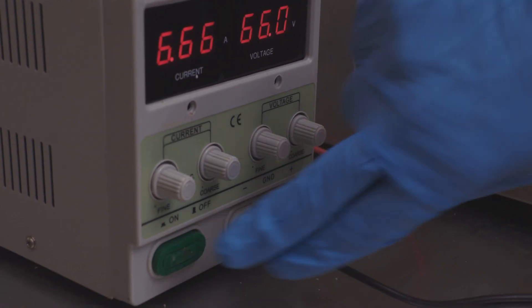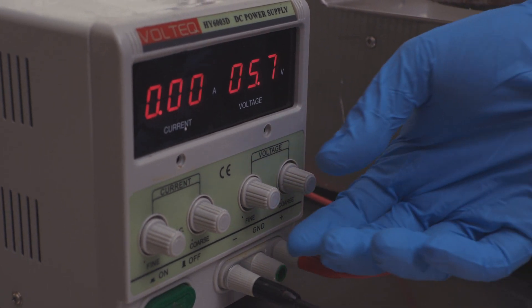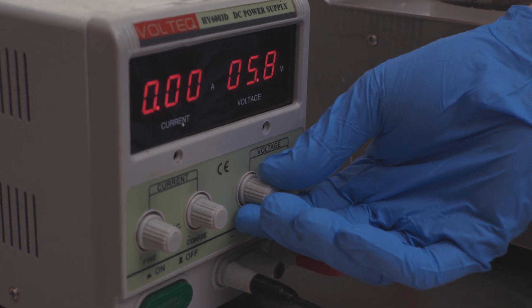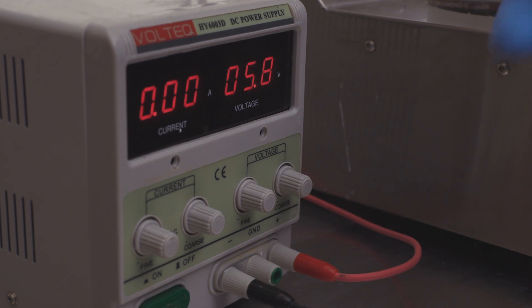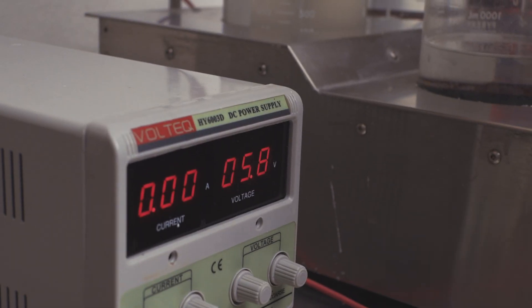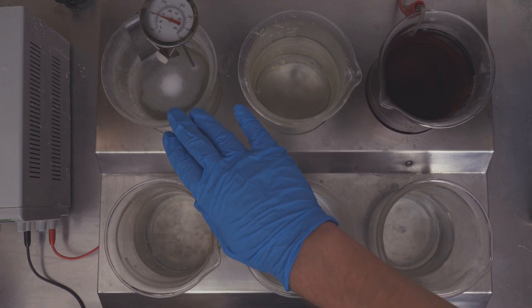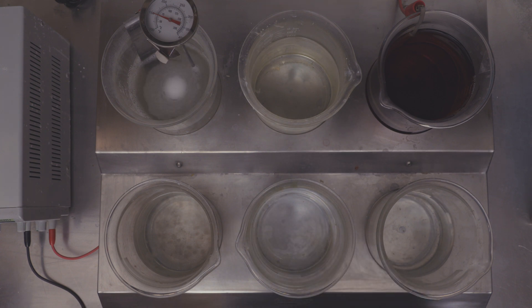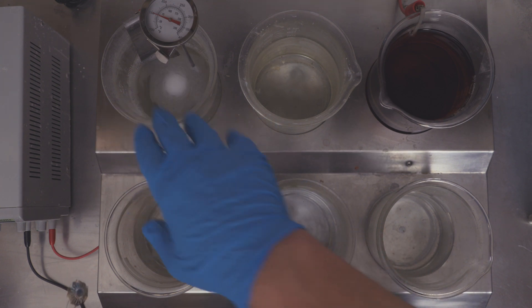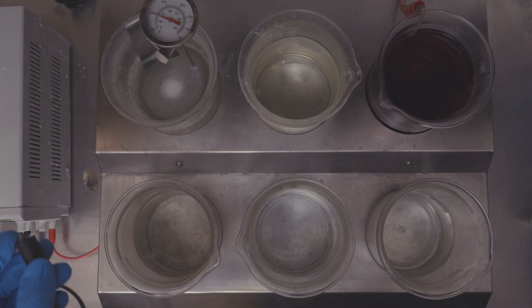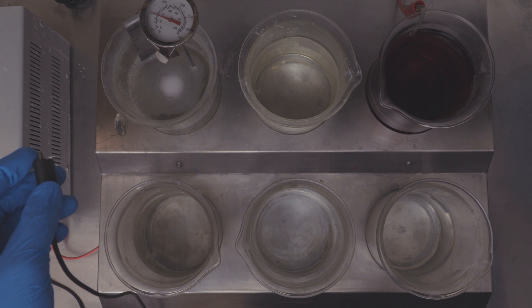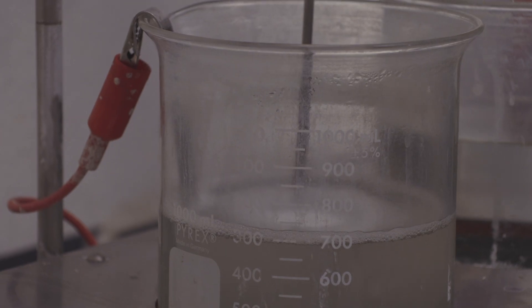So I'm going to turn on the rectifier to 5.8 volts. This is optimum voltage for electrocleaning. My electrocleaner has already been heated up to 150 degrees Fahrenheit and we will want to put it in there for 60 seconds. We're also using a stainless steel anode in the electrocleaner. Set my timer.